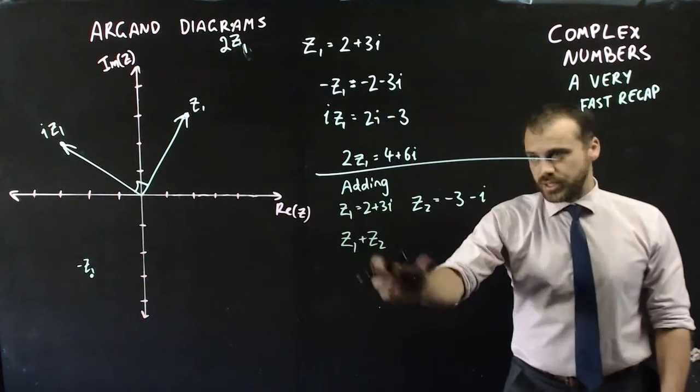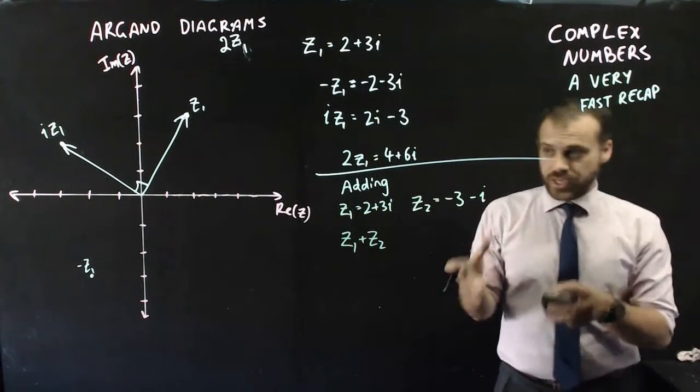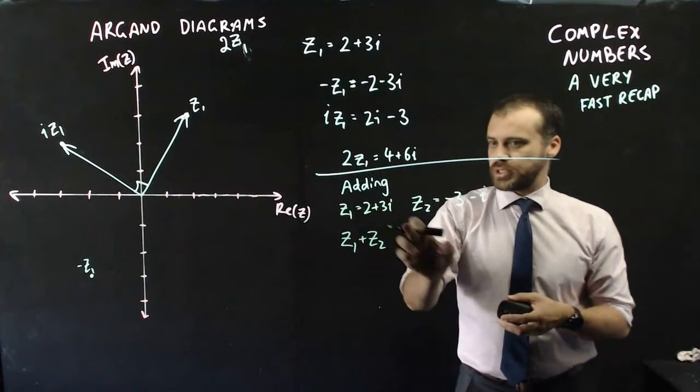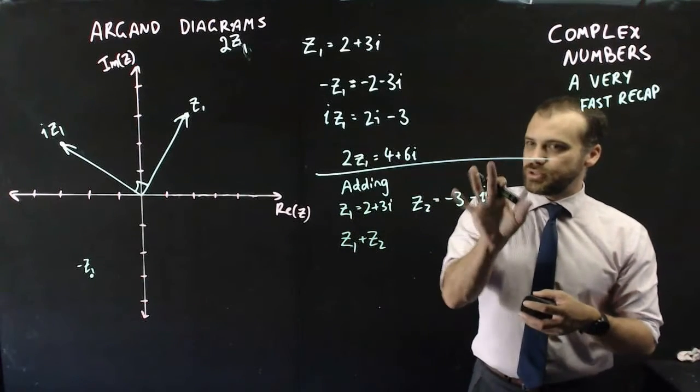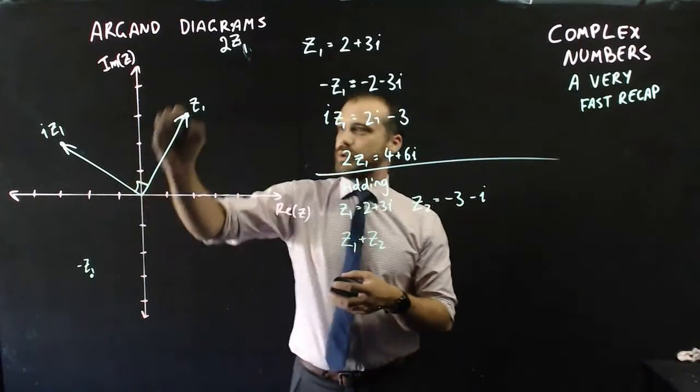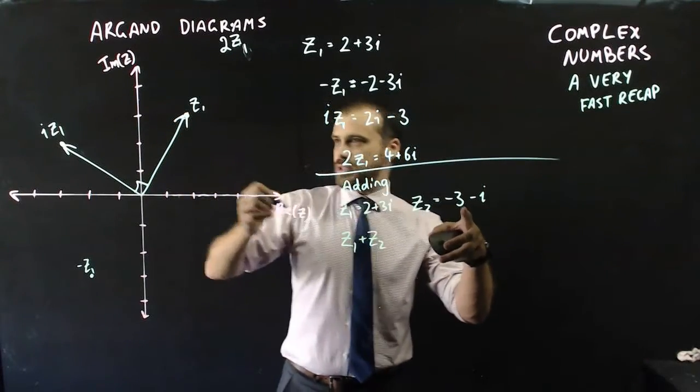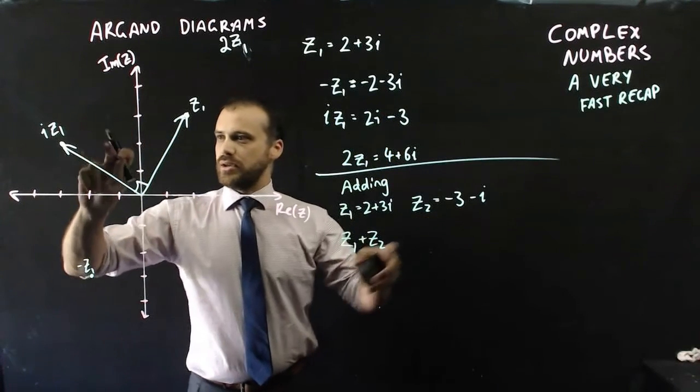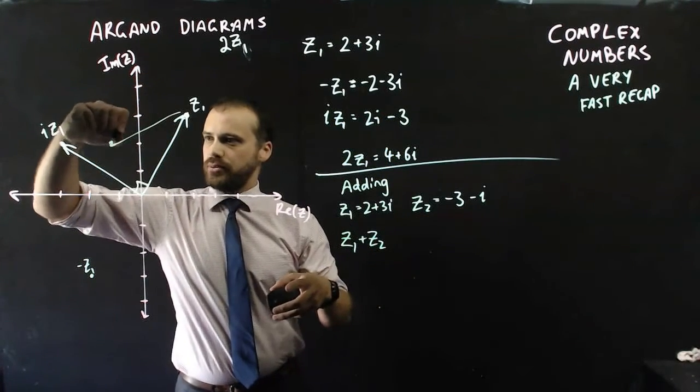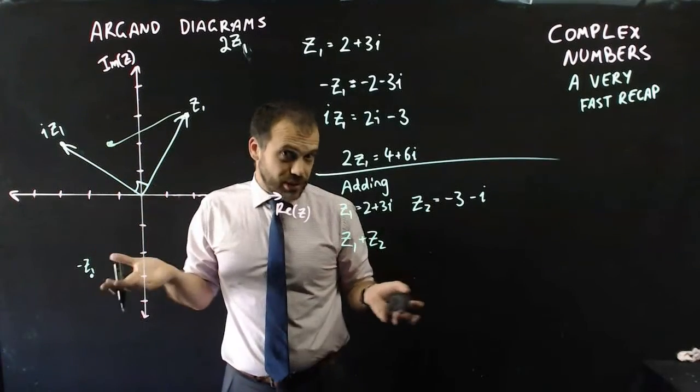This also means that if you were doing addition of two complex numbers, it works the same as the addition of vectors. So if z1 is 2 plus 3i and z2 is equal to negative 3 minus i, we can do this kind of trick here where we say, well, there's my arrow for z1. z2, so minus 3, so 1, 2, 3, minus i, down 1. And we do this addition of vectors thing, but we do it with complex numbers.